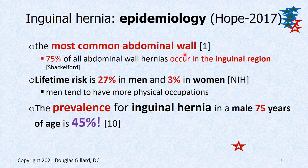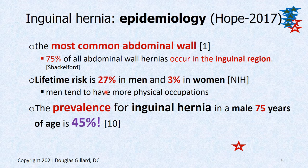Inguinal hernias are the most common abdominal wall hernia — 75% of all abdominal wall hernias occur in the inguinal region. The lifetime risk is about 27% in men and 3% in women. The prevalence of inguinal hernia in someone over 75 years is almost 50% — about 45% — so these are very common in older people.